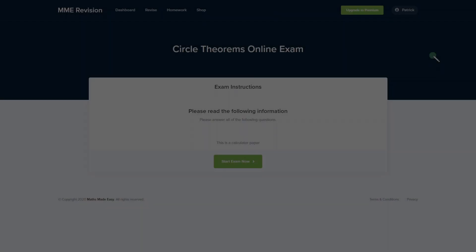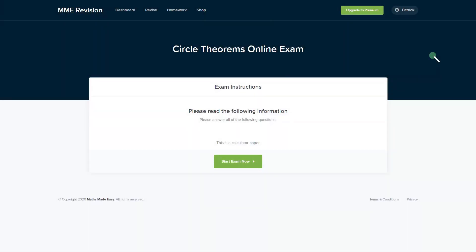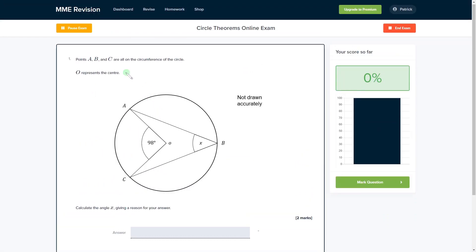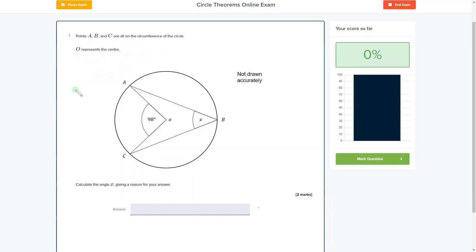If you'd like to get more practice with some circle theorems exam style questions, you can have a go at our online exam, which you can find through our revision platform. You'll find a variety of different question types, plenty of different questions to practice, and you get instant feedback on each and every one of them. So this is really useful if you want to try and get some feedback on the areas that you need to improve on. If you're interested and you want to take the exam, then please click the link below.